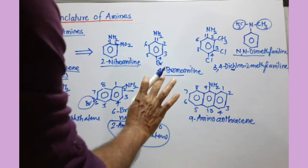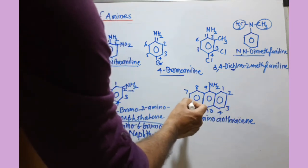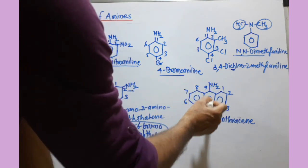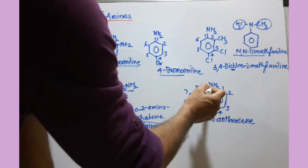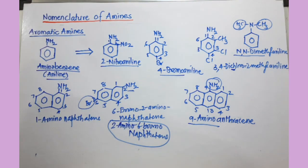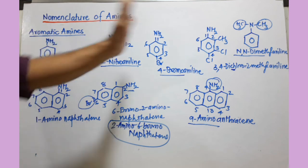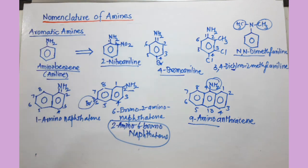In the case of anthracene, the numbering pattern is the same: 1, 2, 3, 4, then the last ring 5, 6, 7, 8, and then the two middle carbons 9 and 10. Here the amino group is at position 9, so this becomes 9-aminoanthracene. For aromatic amines in general, you just find which aromatic ring is present and, once you know its name, you can provide the systematic name very simply. This is much simpler compared to aliphatic amines.